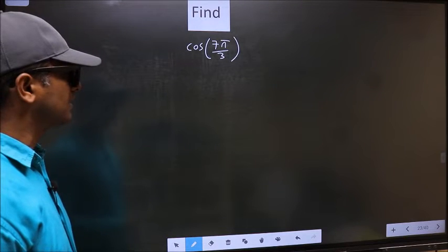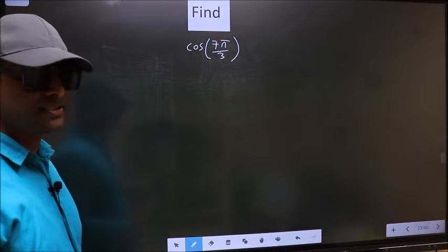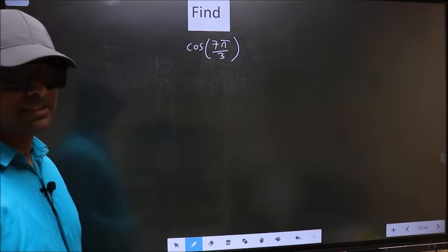Find cos 7π by 3. To find this, we should follow this method. See.